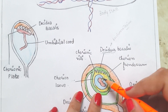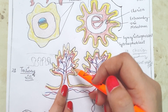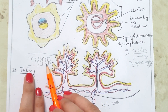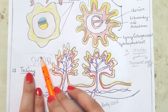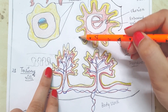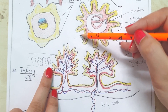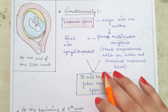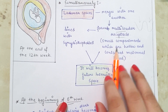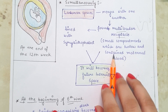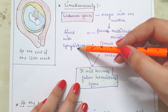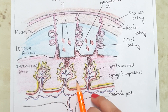The body stalk will later develop into the umbilical cord. When the tertiary villi are formed, simultaneously the lacunar spaces merge with one another. The trabeculae develop into tertiary villi while the lacunar spaces develop into the intervillous space — the space between the villi — forming a multilocular receptacle: small hollow compartments filled with maternal blood, which becomes the future intervillous space.